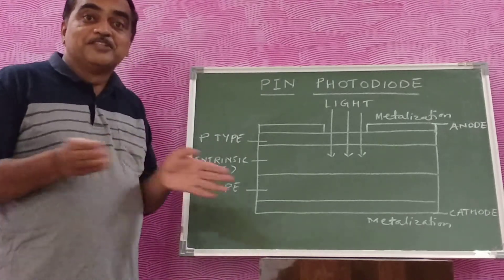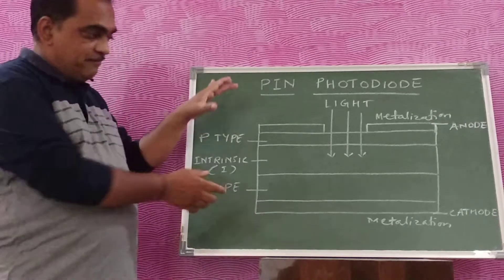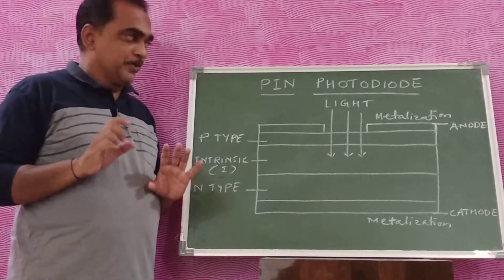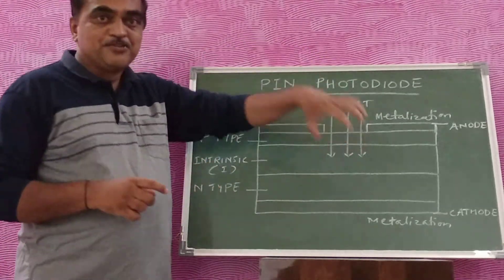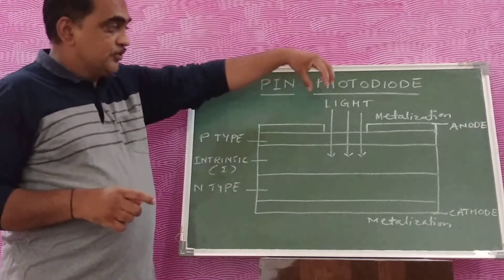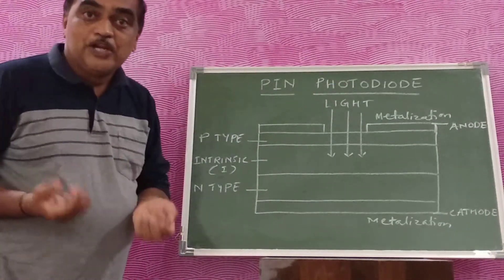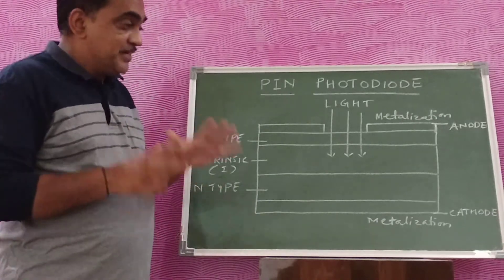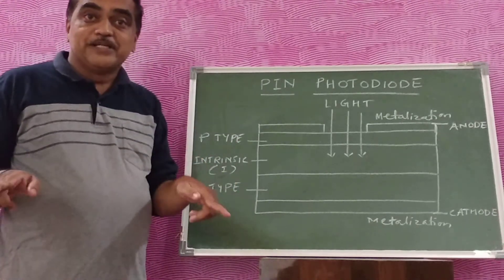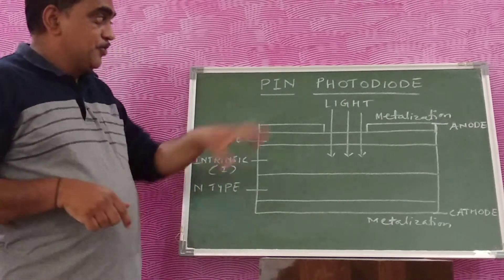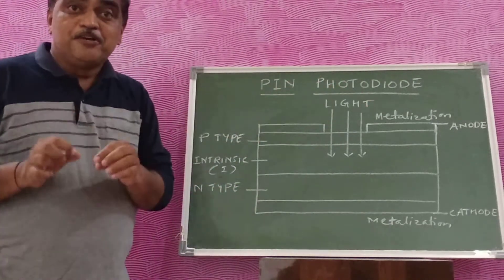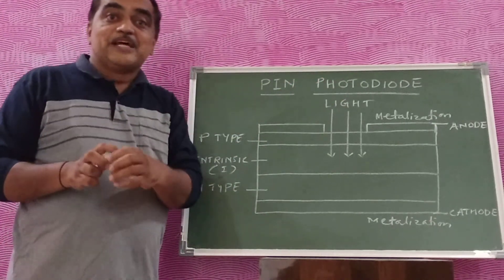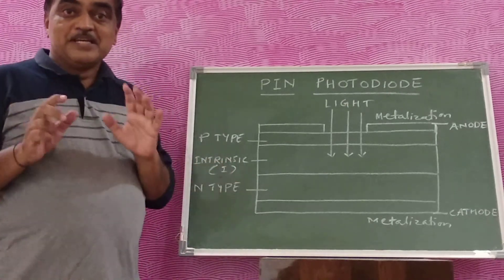These electron-hole pairs can accommodate the reverse current. If the diode is connected in reverse bias with minimum voltage, when light falls on the depletion region, every photon will give rise to an electron-hole pair. These pairs constitute a reverse current. The current flowing magnitude will depend on the intensity of light—how much light is falling, that much current is flowing in the circuit. Light energy is converted into electrical energy by this PIN photodiode.